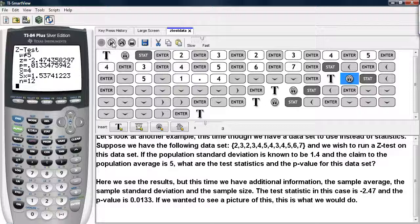And it provides us with the following information. It tells us the alternate hypothesis that we ran. It gives us the test statistic, which is negative 2.47, and the p-value, which is .013.